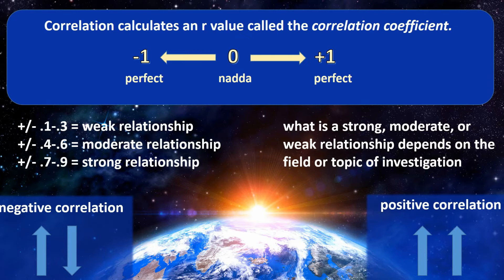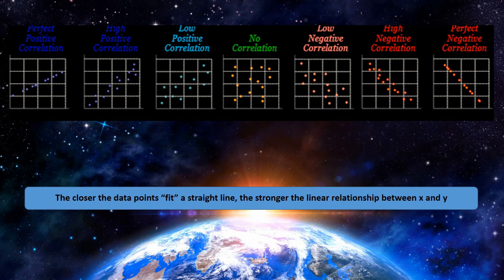When would we see a negative correlation? Here's an example: as the temperature outside drops, the more we shiver. We'd have to quantify how we measure shivering, but as the temperature drops you begin to shake more and more — that would be an example of a negative correlation. It's often helpful to visualize what correlations look like by examining a scatter plot.